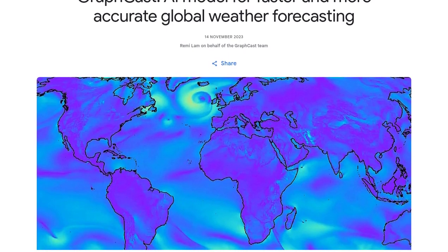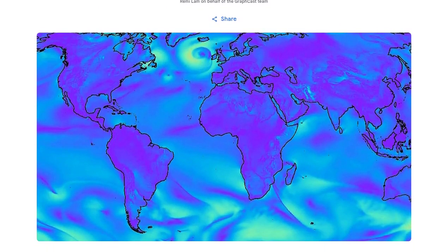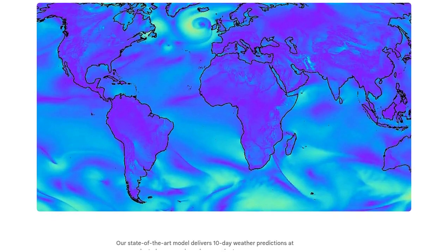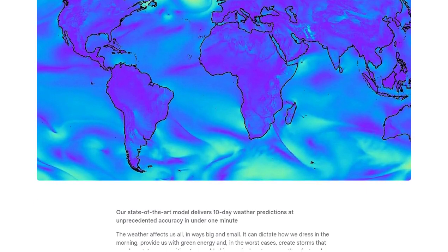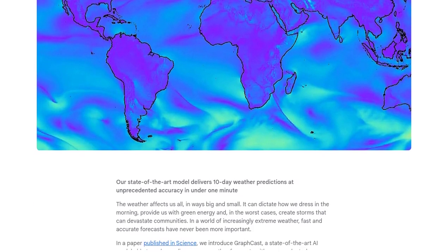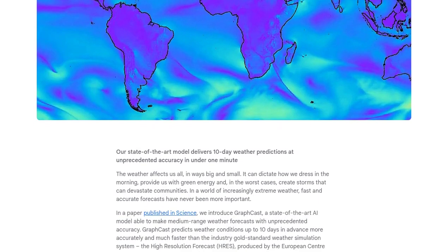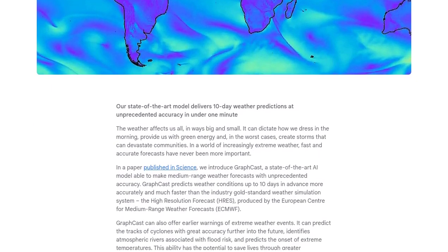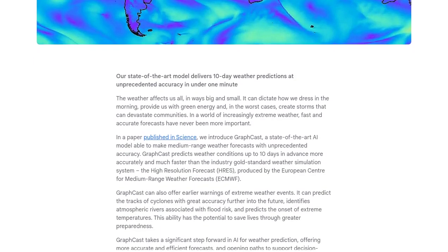With GraphCast, you can now get accurate weather forecasts up to 10 days in advance. No more relying on outdated information or last-minute surprises. This AI model has been trained on decades of historical weather data, making it incredibly reliable and precise.